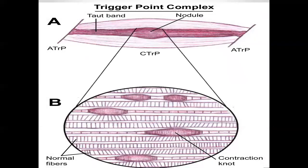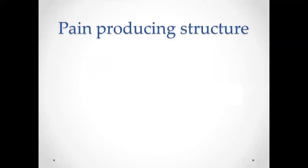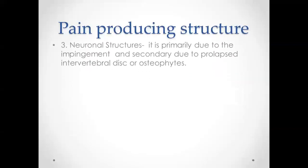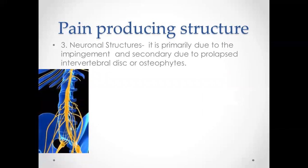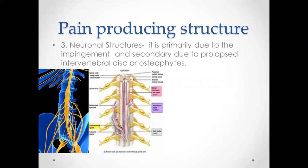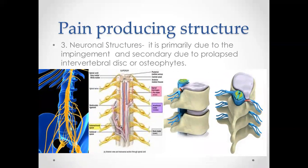The third pain-producing structure is neural structures. Pain is primarily due to impingement and secondarily due to prolapsed intervertebral disc or osteophyte formation. As we can see here, this is the spinal tract behind the backbone, showing the dorsal and ventral root canals, and how a disc is impinging the nerve endings due to a prolapsed intervertebral disc.